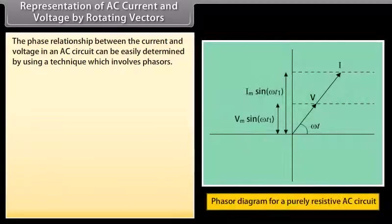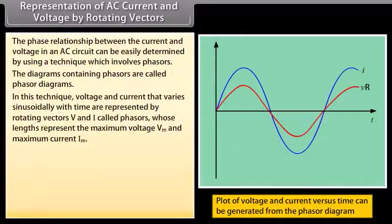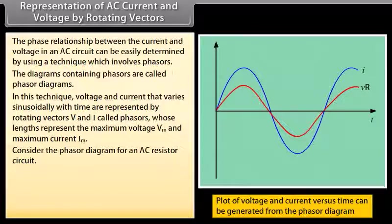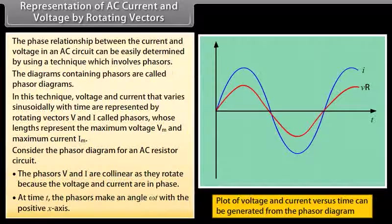Representation of AC current and voltage by rotating vectors: the phase relationship between the current and voltage in an AC circuit can be easily determined by using a technique which involves phasors. The diagrams containing phasors are called phasor diagrams. In this technique, voltage and current that vary sinusoidally with time are represented by rotating vectors V and I called phasors, whose lengths represent the maximum voltage Vm and maximum current Im. For an AC resistor circuit, the phasors V and I are collinear as they rotate because the voltage and current are in phase. At time t, the phasors make an angle ωt with the positive X axis.